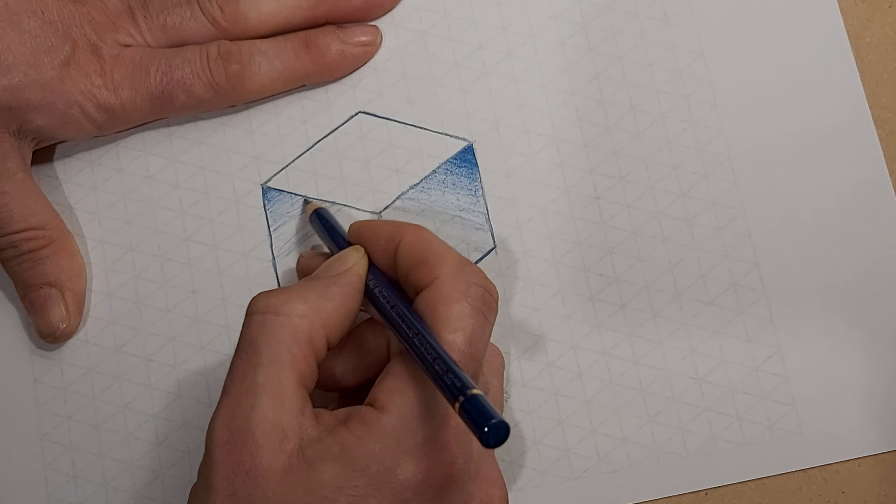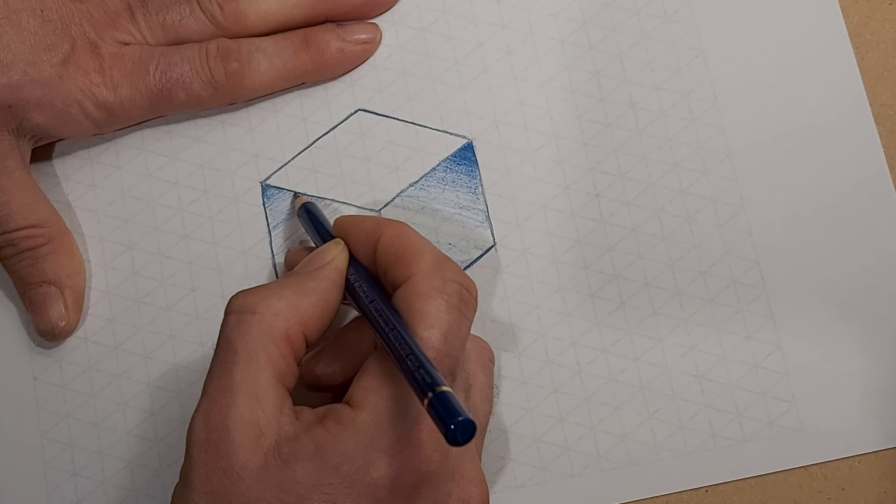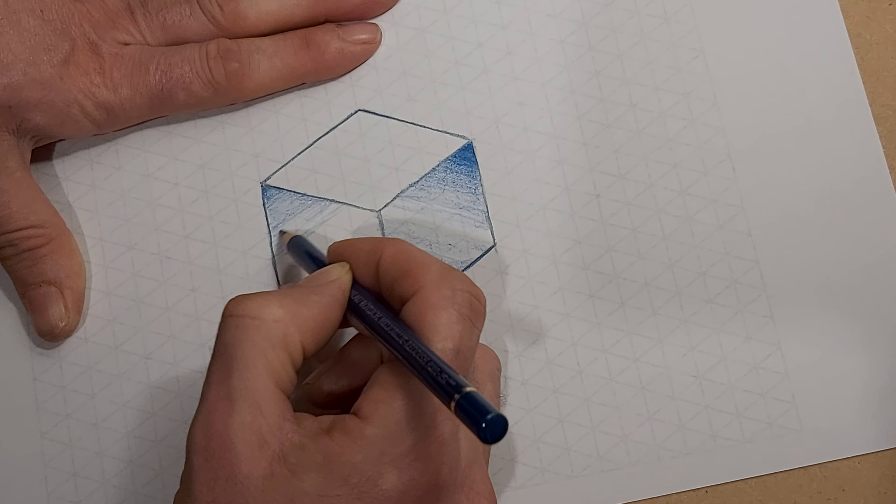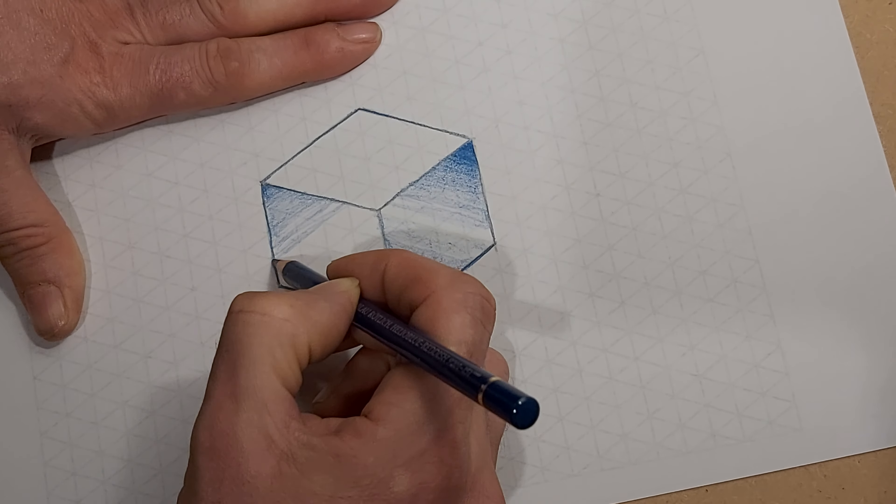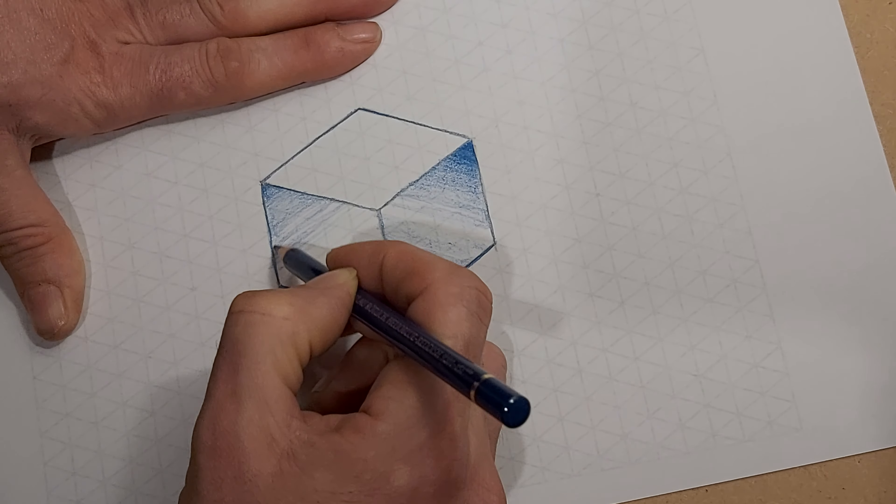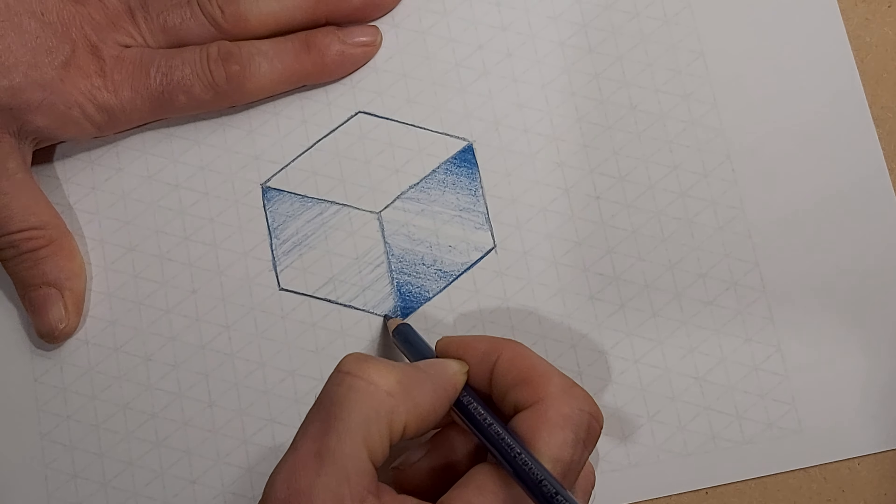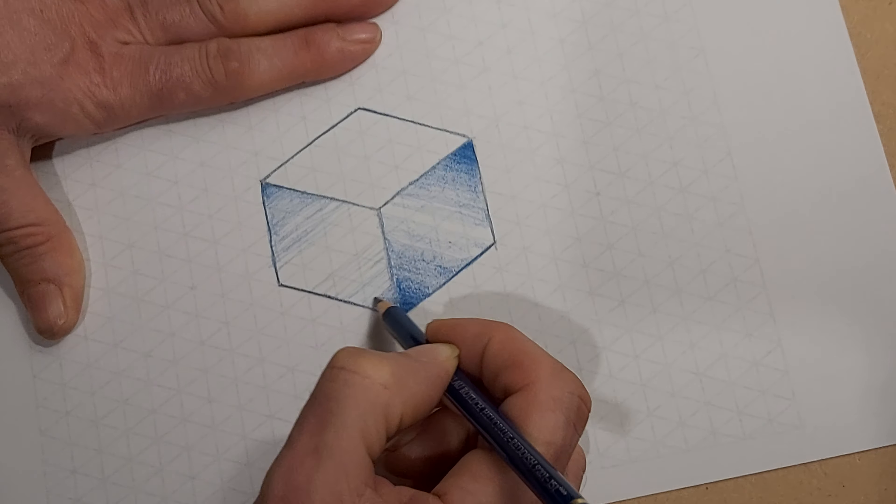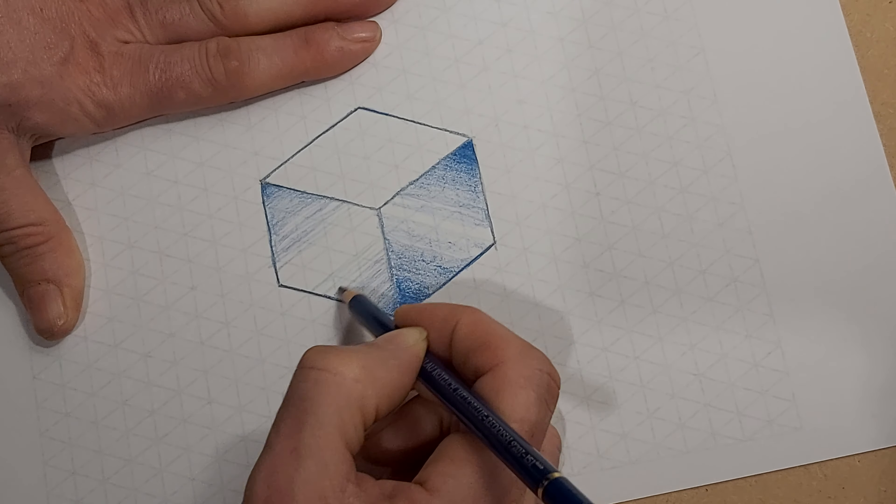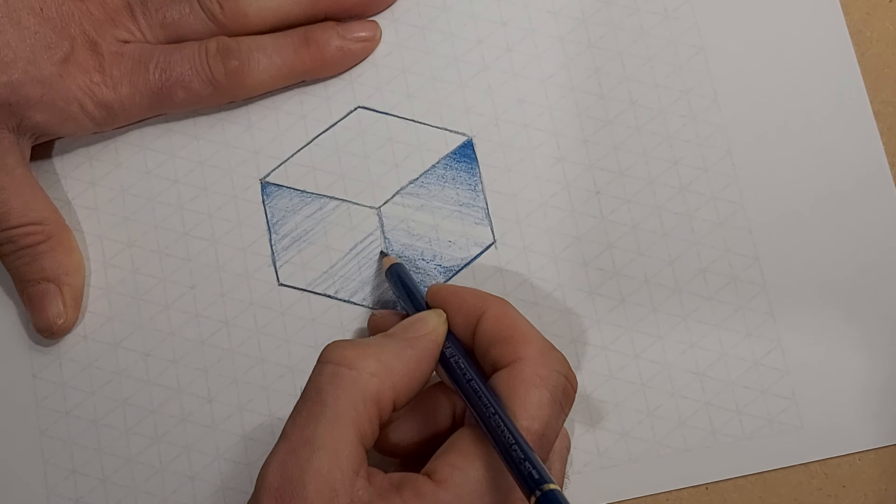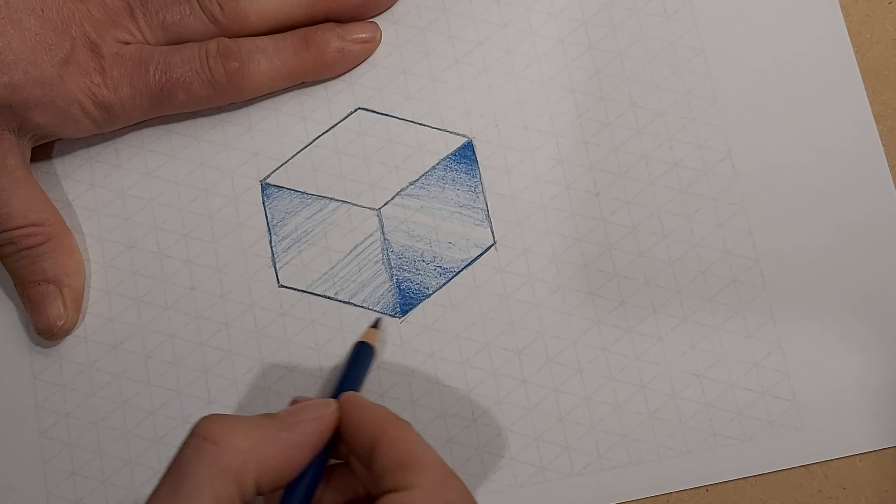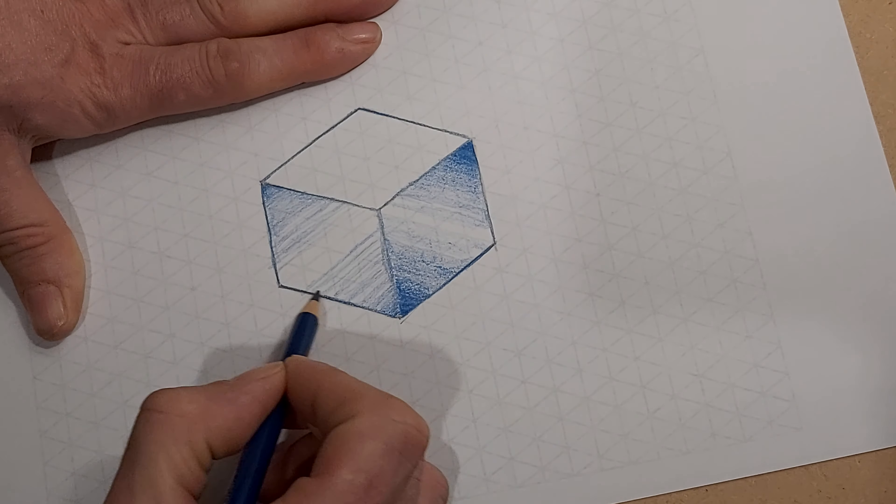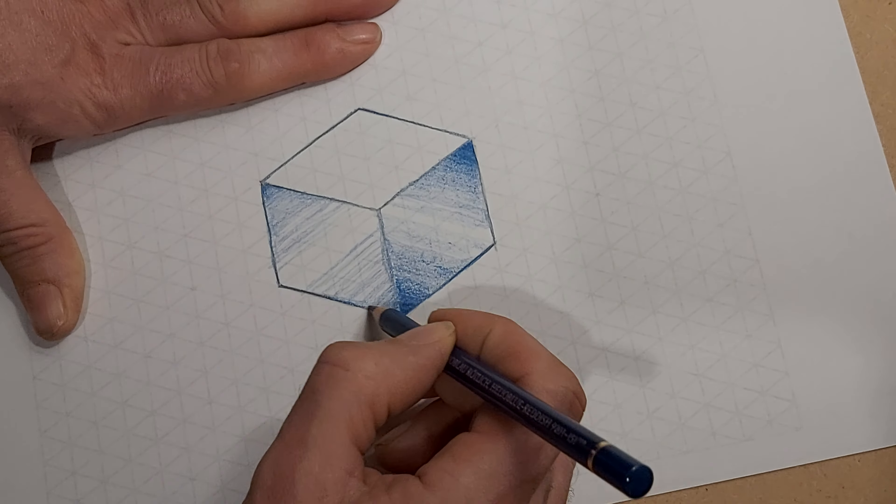And go over it again. Try and lose some of these white patches. It doesn't matter if you leave a few white stripes as you come through it because that's going to give the illusion of the light reflected off the plastic.